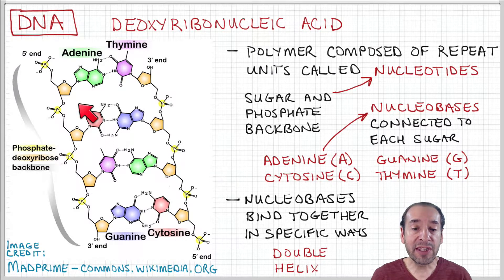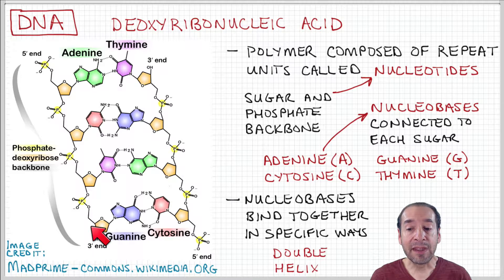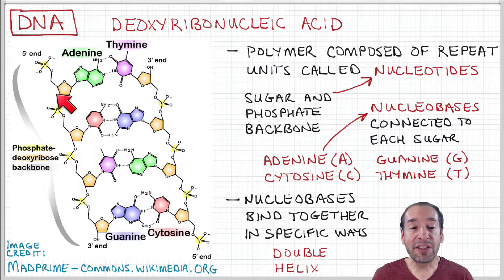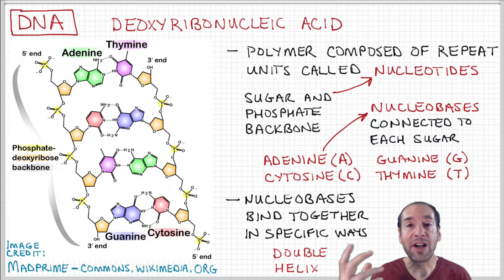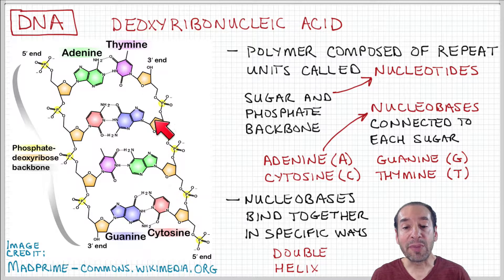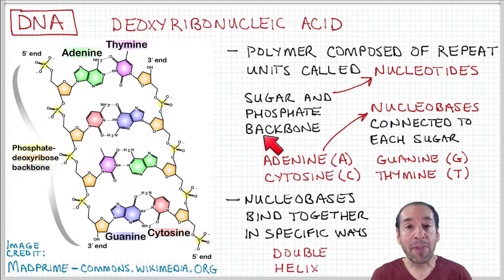This structure forms the polymer chain of DNA. What's interesting is that these nucleobases actually bind with nucleobases on a neighboring chain in specific ways. We talked about the covalent bonds that hold the chain backbone together, but there can also be secondary bonding that helps the polymer chain assume a more complex global structure. If I cut this down the middle, the left-hand side is one polymer chain and the right-hand side is another — these two chains can be held together when their nucleobases bind together in specific ways.